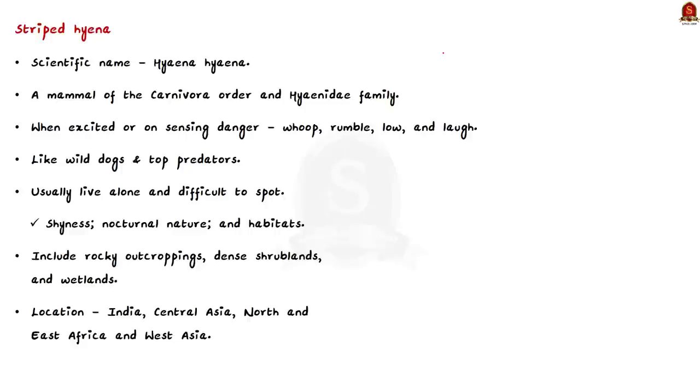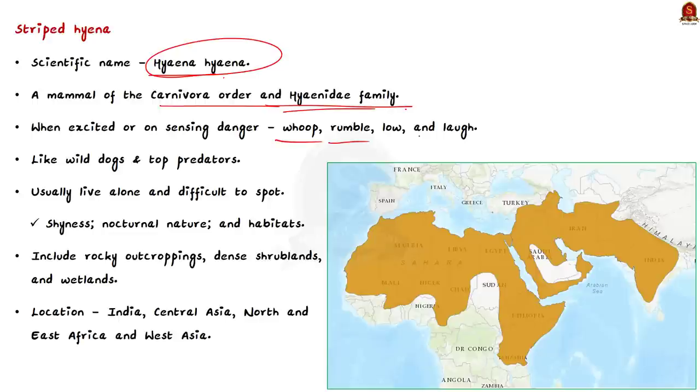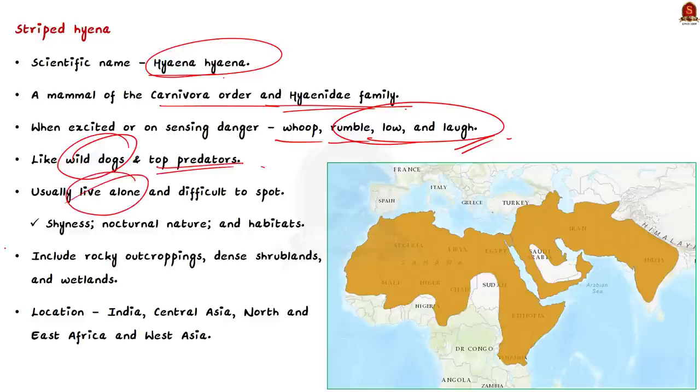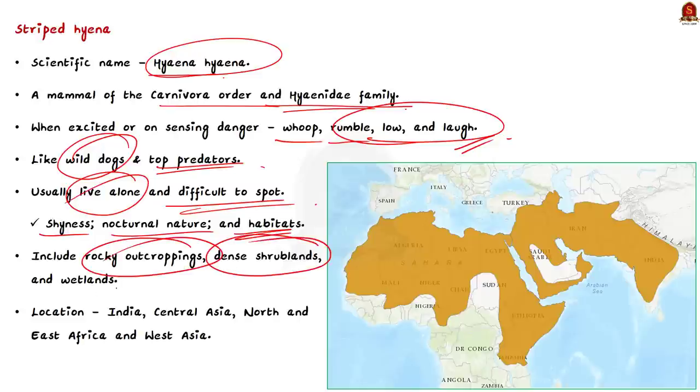The scientific name of Indian striped hyena is Hyaena hyaena. It is a mammal of the Carnivora order and Hyaenidae family. They whoop, rumble, low and laugh when they are excited or sensing danger. Hyenas are like wild dogs and are top predators that compete with other species. Striped hyenas usually live alone and difficult to spot. This is due to their shyness, nocturnal nature and habitats which include rocky outcroppings, dense scrublands and wetlands. When we talk about the location, they are found in India, Central Asia, North and East Africa and West Asia. Now we will see about the physical features of striped hyenas.